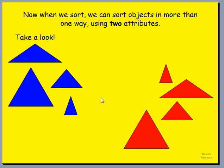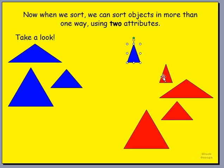Now we can also sort them out in a different way. We can sort them because they're the same shape and the same size. Have a close look — do you see any triangles that are the same size? We know they're all triangles, so they have that in common, but are there any triangles that are the same size?